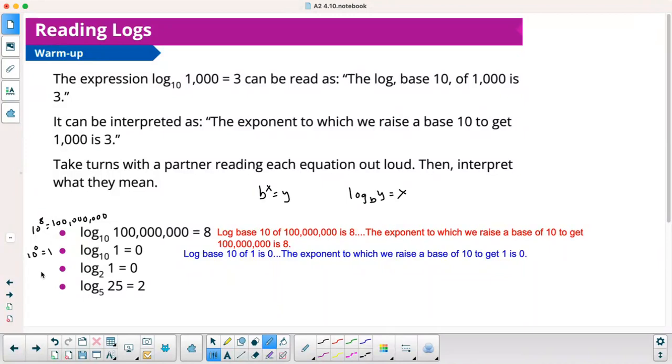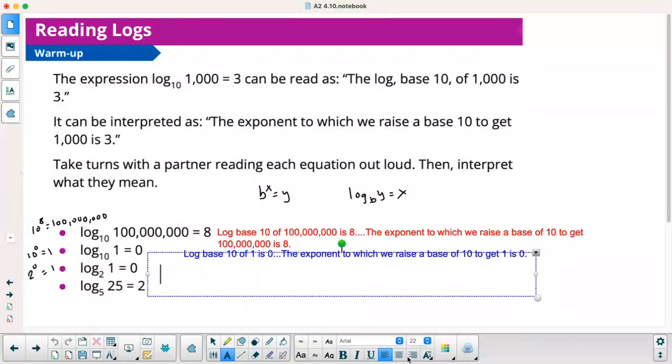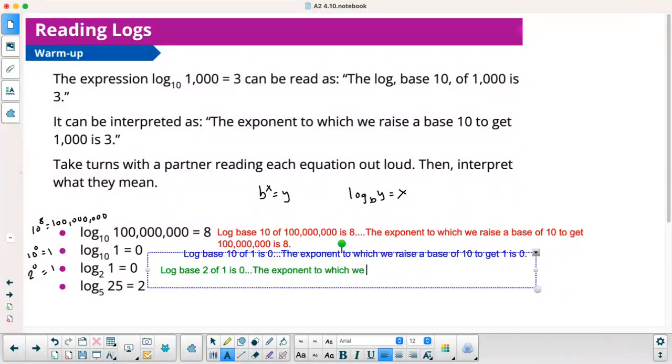The next one here is 2 to the 0 equals 1. And how would I interpret that? I'd read as log base 2 of 1 is 0. And I would interpret it as the exponent to which we raise a base of 2 to get 1 is 0.